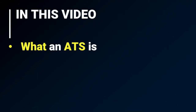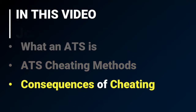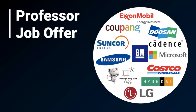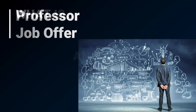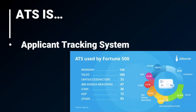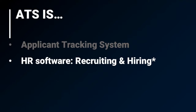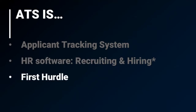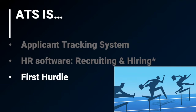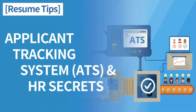In this video I want to tell you about what an ATS is and how it impacts your job search, different ATS cheating methods people have tried, and some consequences of cheating. I'm Professor Job Offer, and I've spent the last 10 years with a number of Forbes Global 2000 companies. I've also helped people land interviews at companies like these. An ATS stands for the applicant tracking system — many different companies use it, like pretty much all of the Fortune 500. It's HR software used for recruiting and hiring, and it's pretty much the first hurdle of your job hunting. If your application doesn't get past the ATS, you're knocked out. These are different dashboards an ATS has; if you want to know more, go check out my video on that.